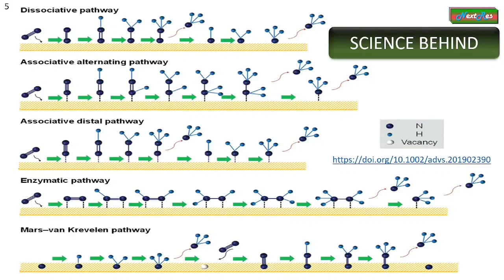Following this Sabatier principle, the NRR process can happen in five mechanistic pathways, as shown in the slide as a schematic diagram. These are very advanced topics. If you ever work in NRR, you will need to learn this in detail.